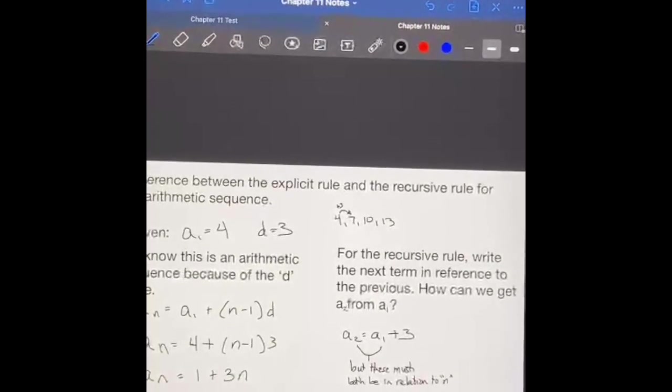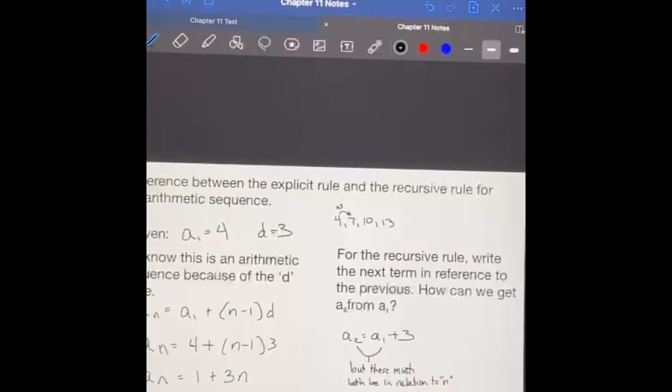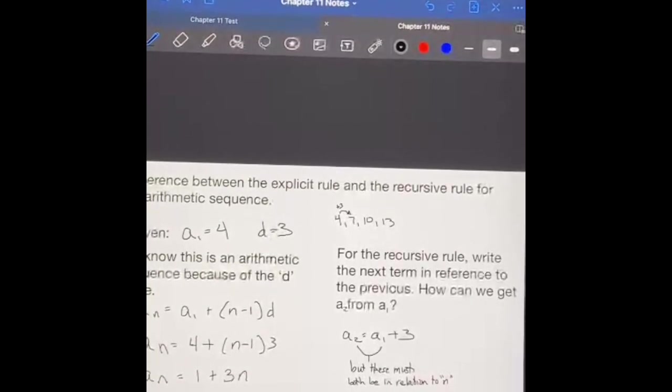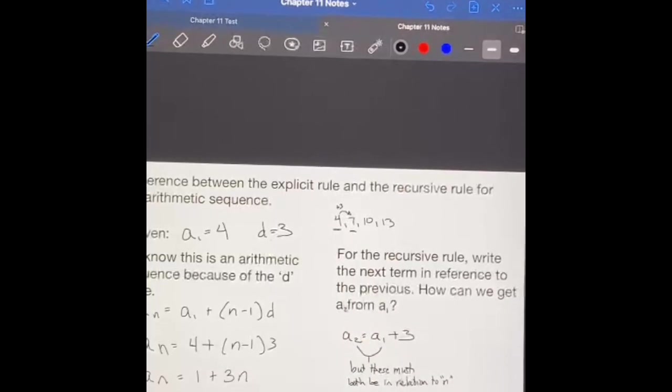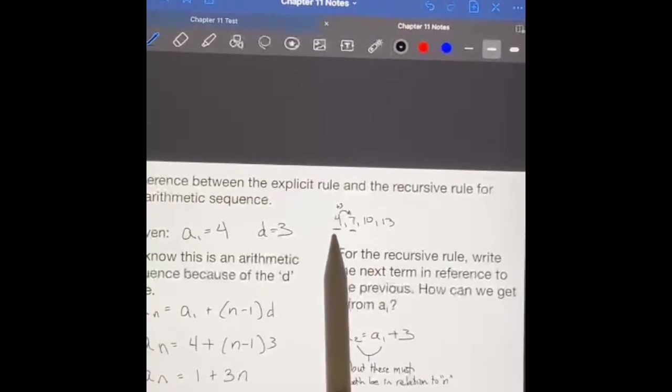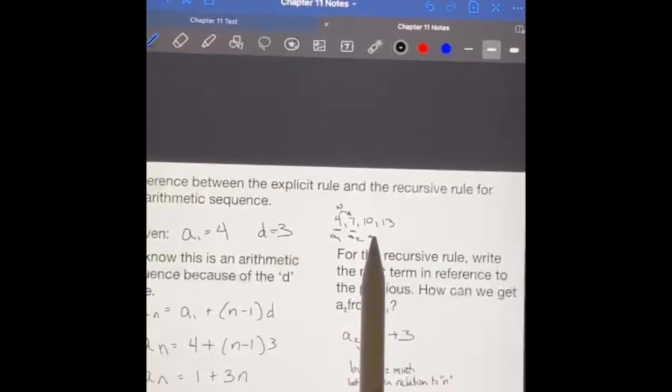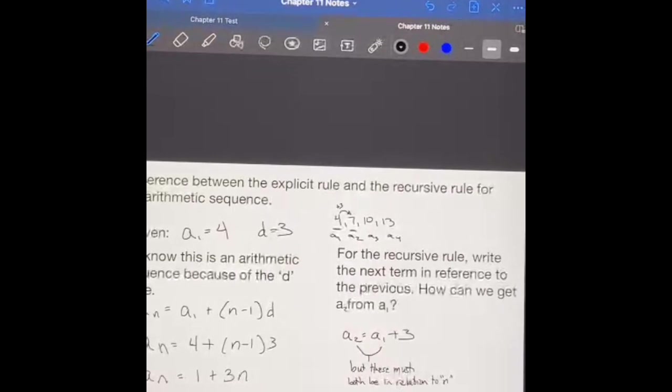So there are a couple of different examples here on the notes. If you want to go back and pull up the notes for it, but remember that our explicit rule, these are our equations that we were given in 11.1 and 11.3 when we were dealing with arithmetic and geometric sequences. Those are going to be your explicit rules. To write a recursive rule, you need to have the actual term values and you're going to look at it and say, how does one term relate to the next one? So in this case, I would call this a one, a two, a three, a four.